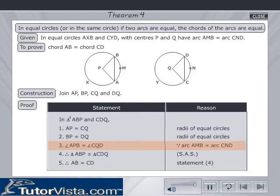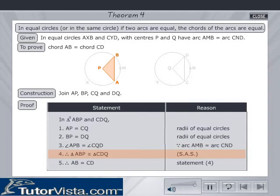Therefore, triangle ABP is congruent to triangle CDQ by SAS postulate. Therefore, AB equals CD.